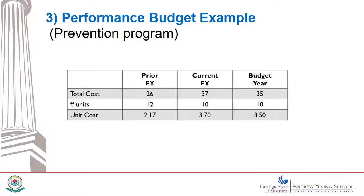Moreover, there may be other non-financial measures that should be counted in addition to the number of meetings. In government and the service sector, it's hard to pin down just one performance measure that adequately captures a causal connection between spending money on that service and getting a desired result. That problem leads many organizations to count and report so many performance measures that the exercise loses its real value. For our purposes here, we assume that there is one indicator that matters the most, and so we track and count it.